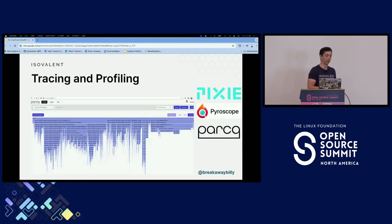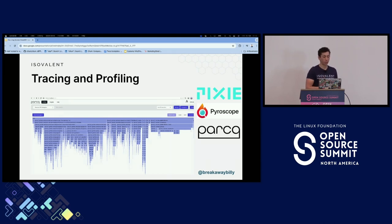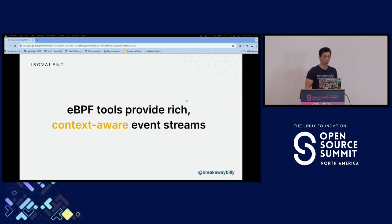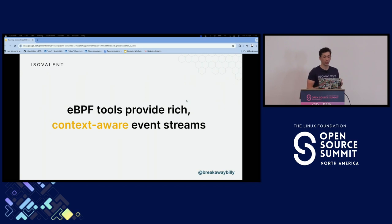The last big use case for eBPF is tracing and profiling. Since you're able to understand all the calls happening in your application, you can trace all of that, profile your application, and really increase its performance. eBPF tools allow you to collect rich, context-aware event streams and then make specific actions on that — and because you're doing this all in the kernel, it allows you to do it in a very performant way.